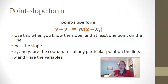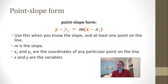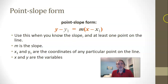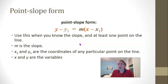Here's the situation. You want to write an equation for a line when you know the slope of the line, and you don't know the y-intercept, but you do know at least one point on the line. You can't use slope-intercept form if you don't know what number to put in for b, but you can use point-slope form: y minus y1 equals m times x minus x1. The m stands for the slope, just like in slope-intercept form, and x-sub-1 and y-sub-1 stand for the coordinates of any particular point on the line.